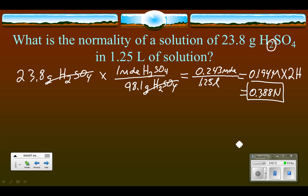Now, there is another way to do the problem using more straight normality type units. So we can start with the same thing, 23.8 grams of H2SO4.